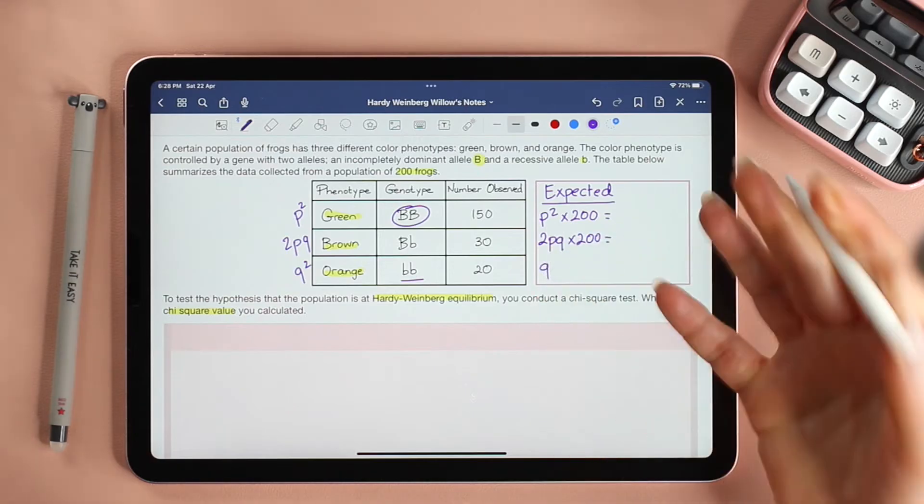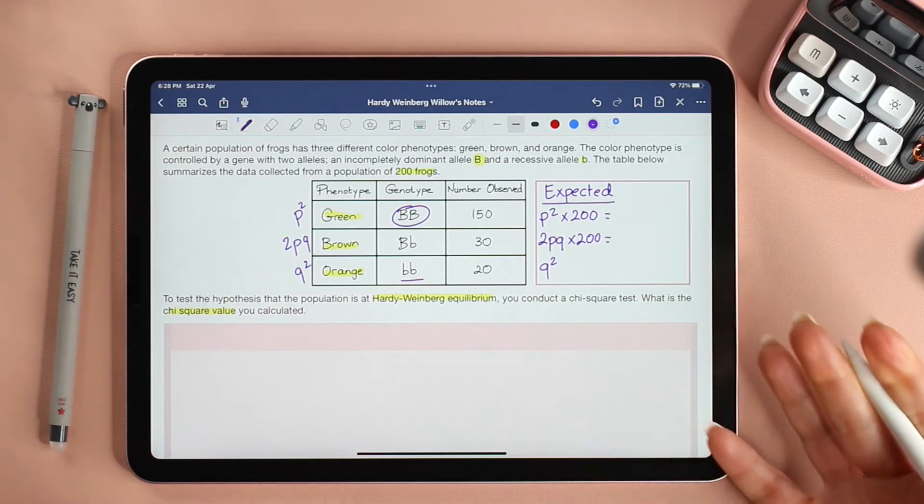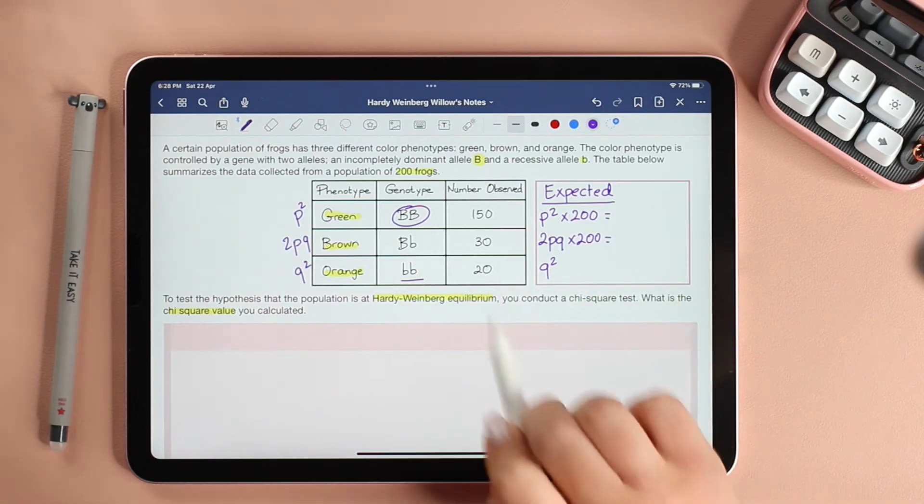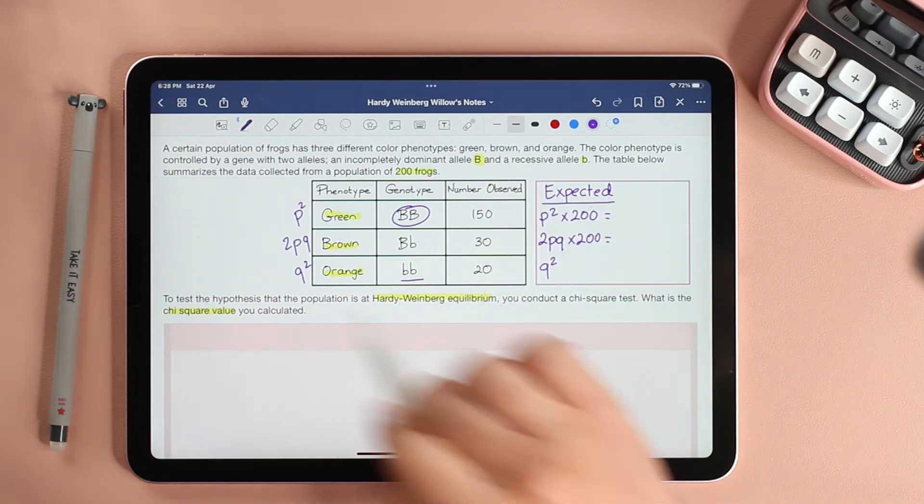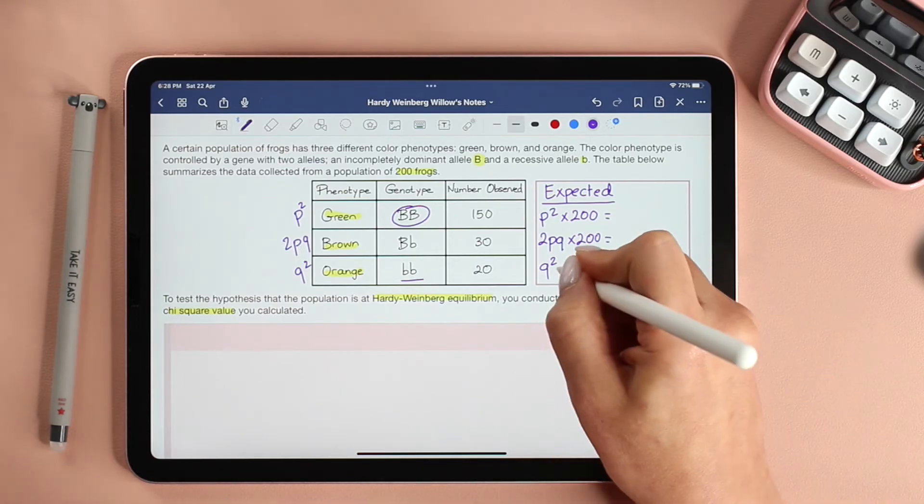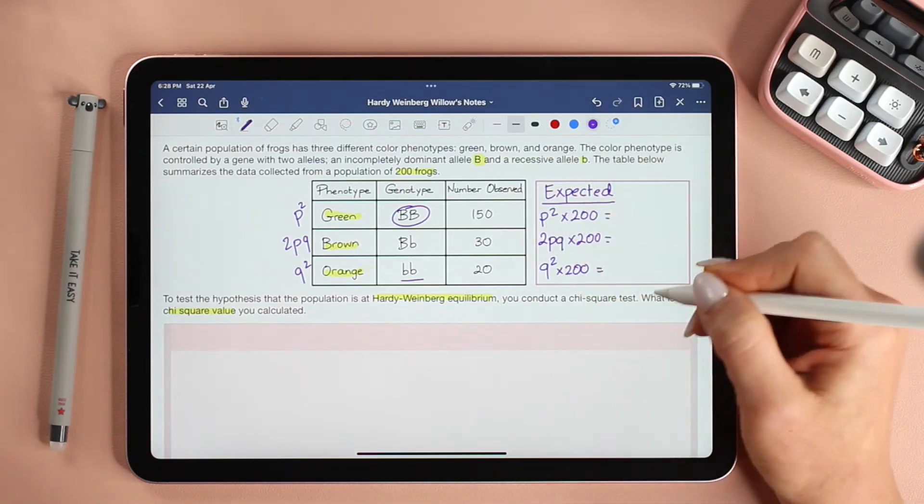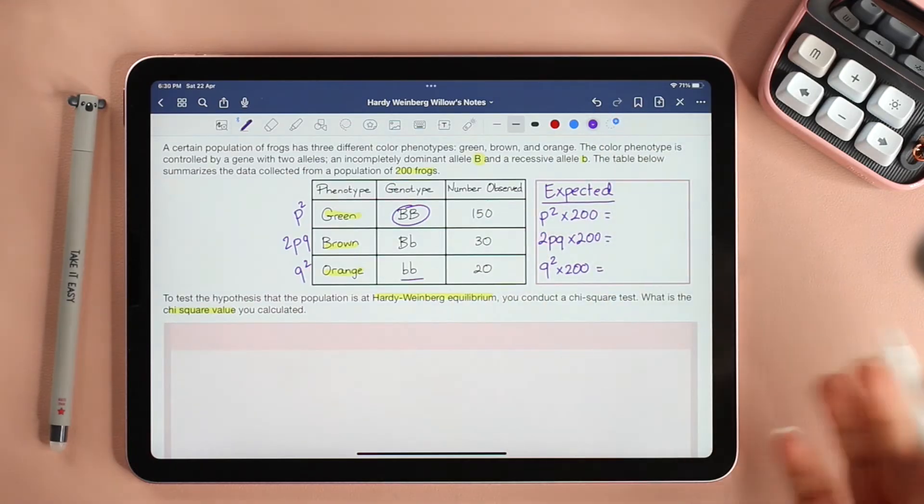Finally, orange is expressed in homozygous recessive individuals, the frequency of which is q². Since q² is the frequency and not the total number of individuals who are homozygous recessive, we need to multiply this frequency by 200, which will give me the total number of individuals for this question.